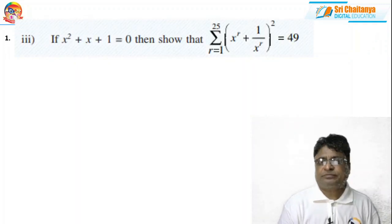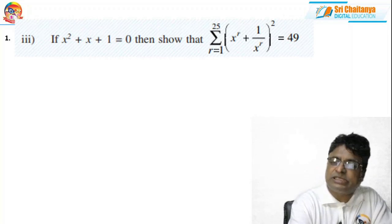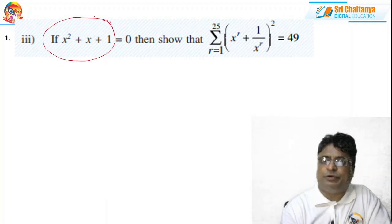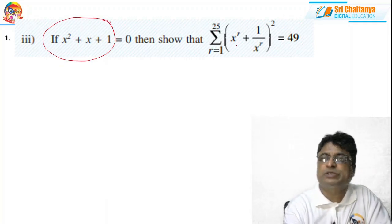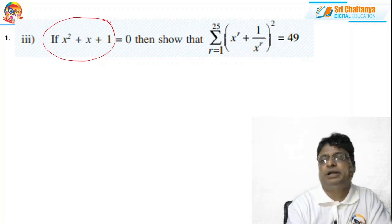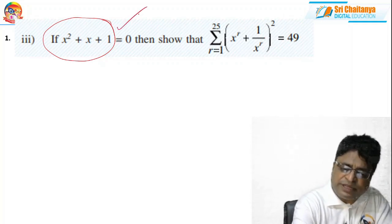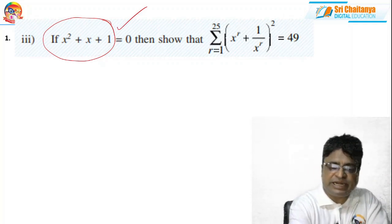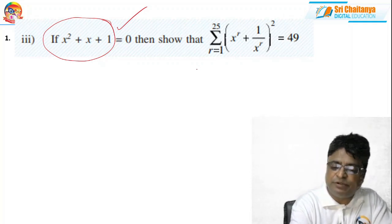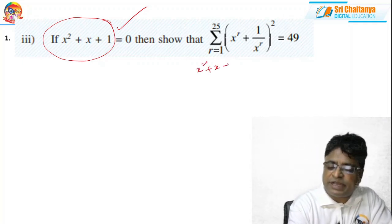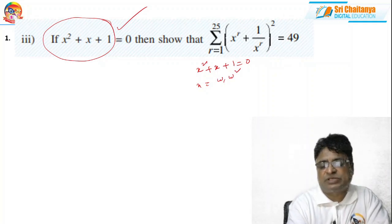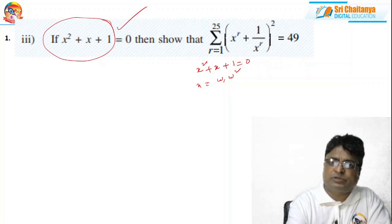Coming to problem number 3. Read the statement carefully. Given: x² + x + 1 = 0, show that Σ(r=1 to 25) [xʳ + 1/xʳ]² = 49. This quadratic equation has roots x = ω and x = ω², because −1 + i√3)/2 = ω and (−1 − i√3)/2 = ω². You can verify this using the quadratic formula.